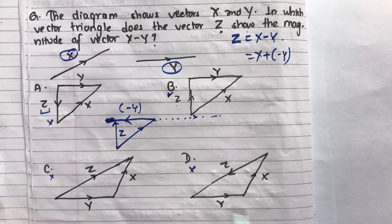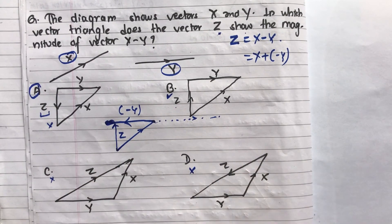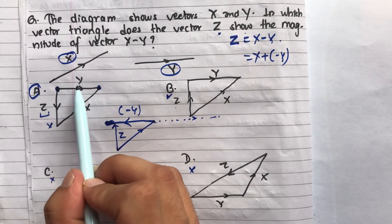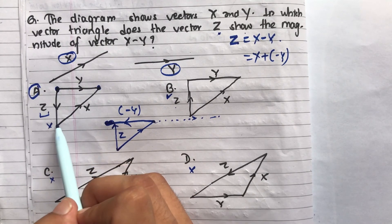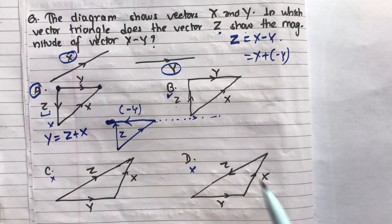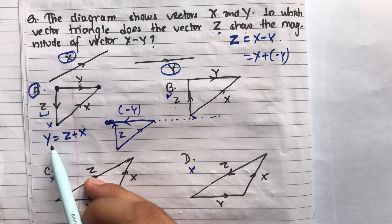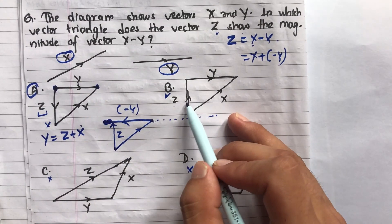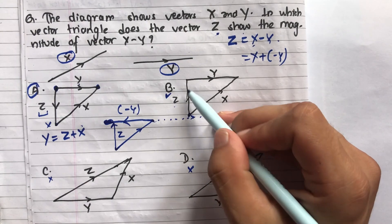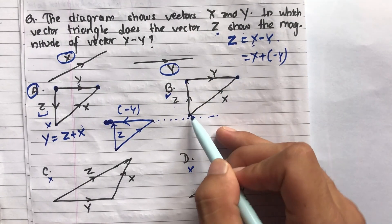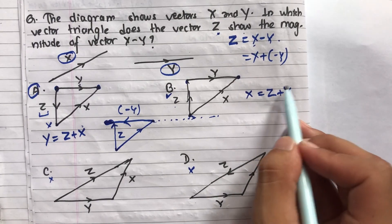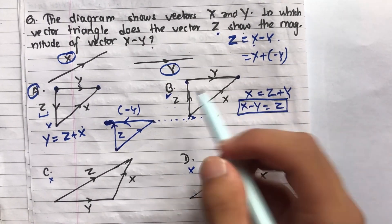Another approach is to analyze the options directly. In option A, the diagram shows Y = Z + X, which rearranges to Z = Y − X — not what we need. In option B, the diagram shows X = Z + Y, which rearranges to Z = X − Y — exactly what we need. So option B is confirmed as the correct answer.